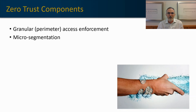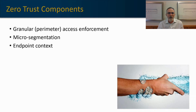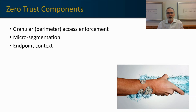The next component is endpoint context. What endpoint are they using — a corporate managed machine, a personal home computer, a smartphone, or a tablet? What is known about that device that gives us comfort it meets certain parameters we've set? What antivirus and anti-malware is running on that device? When was it updated? When was the scan last conducted? Is the device up to date in terms of patches?